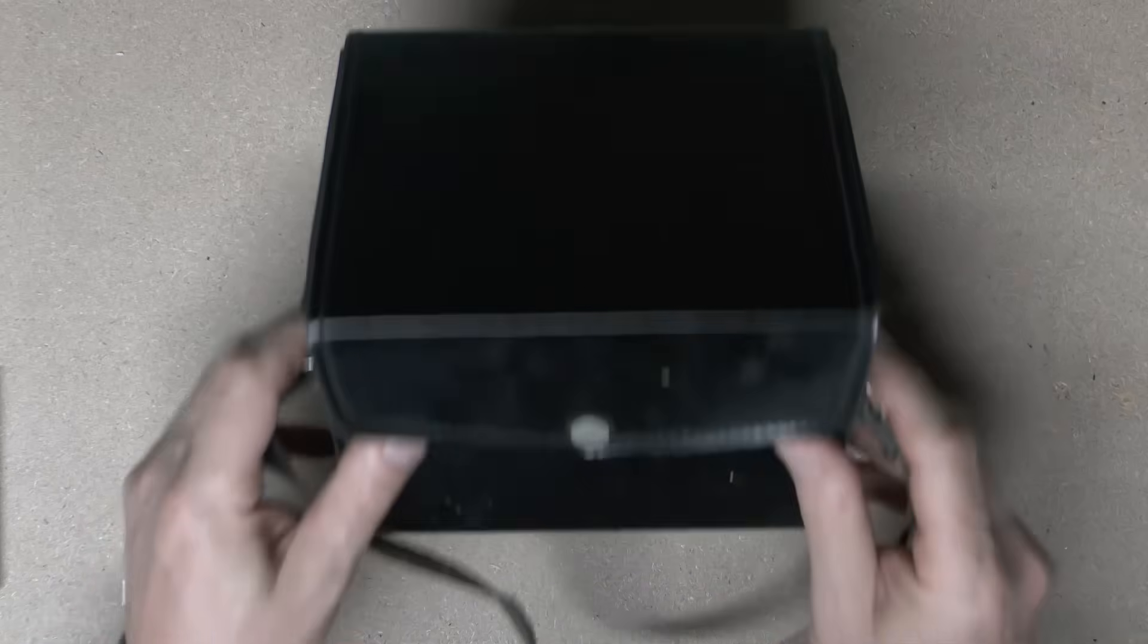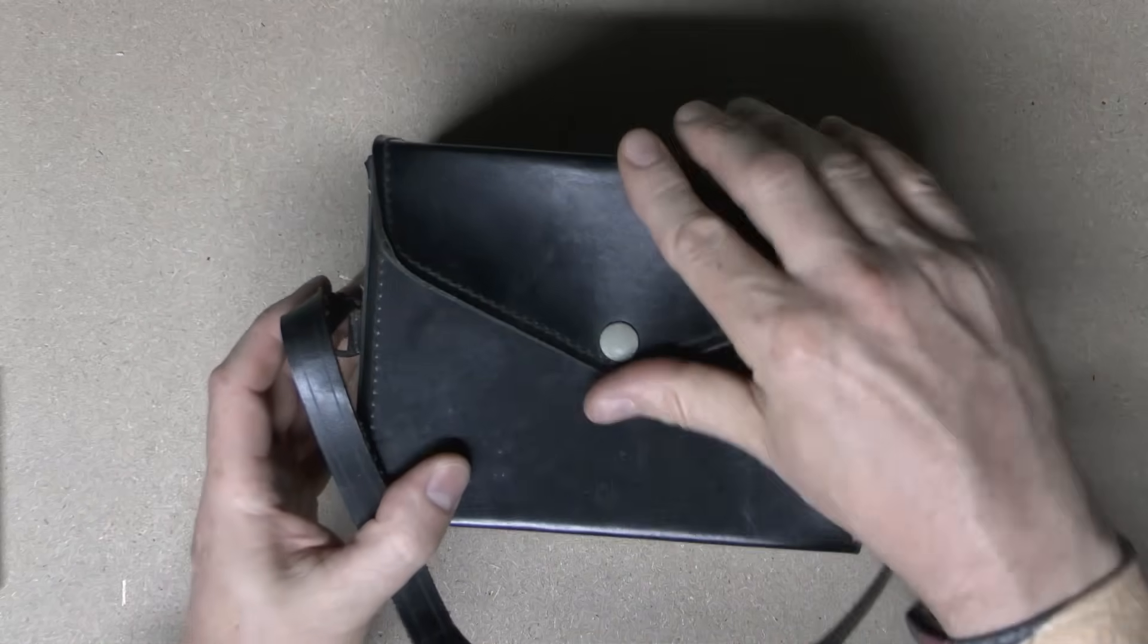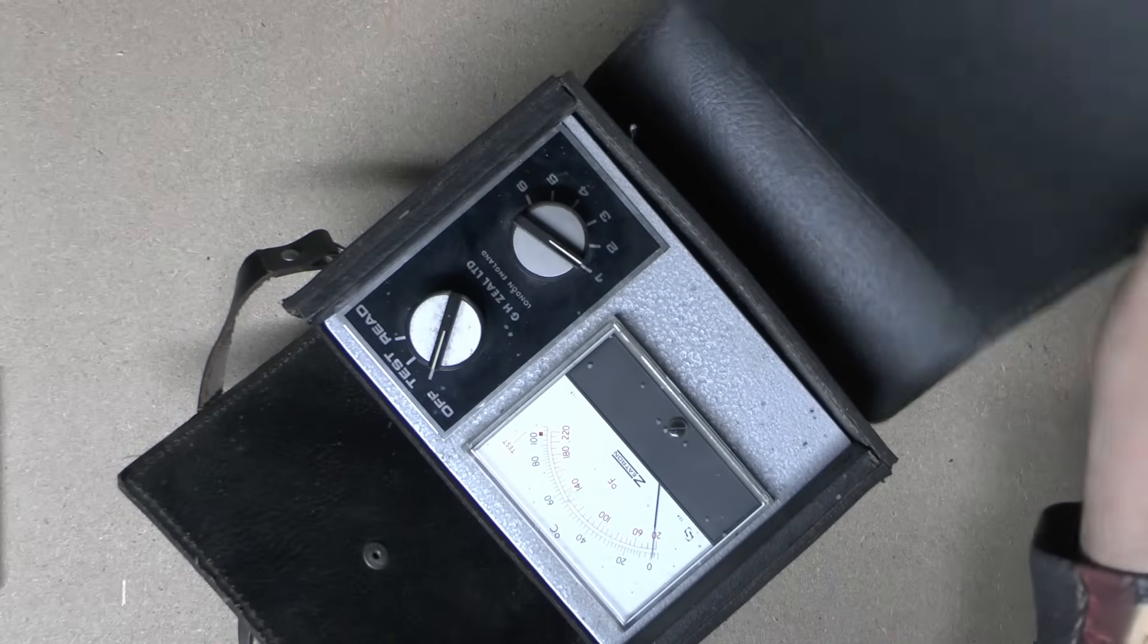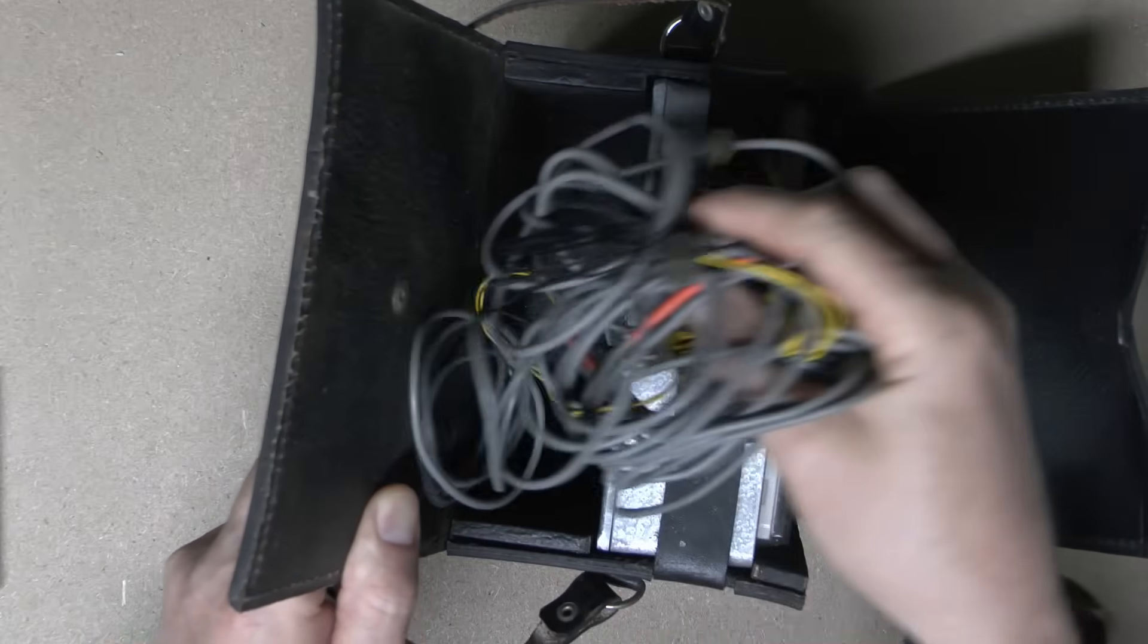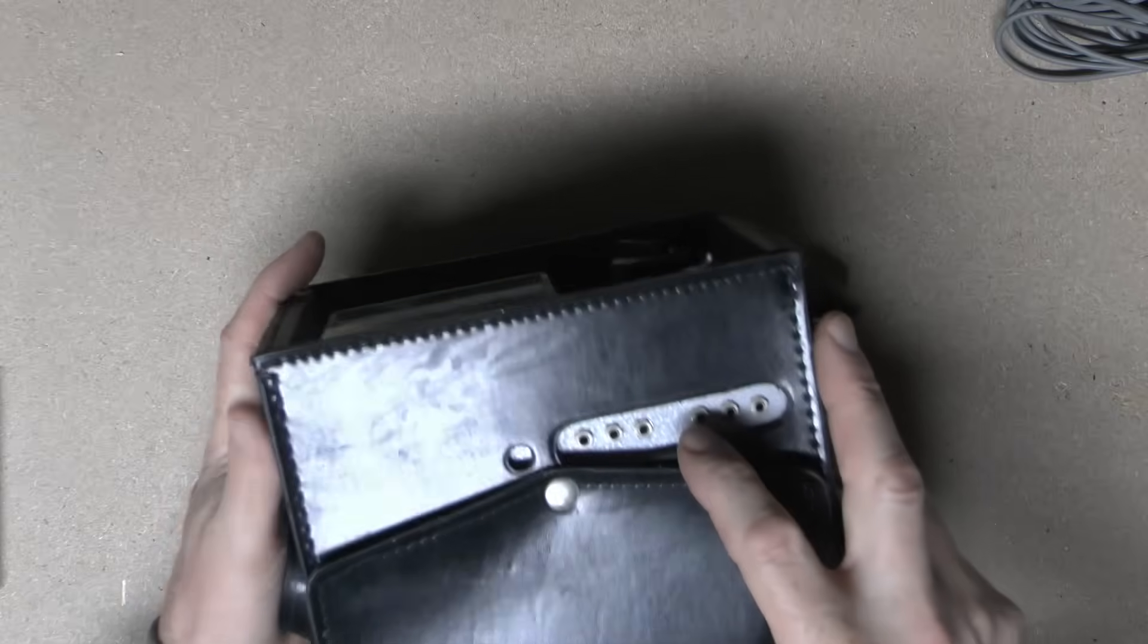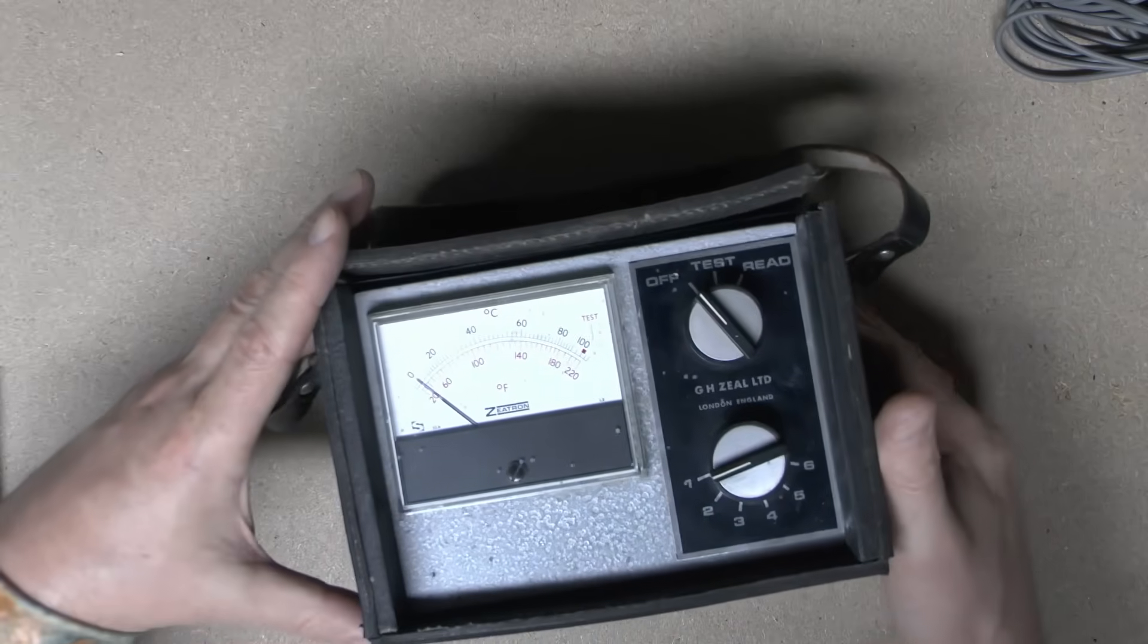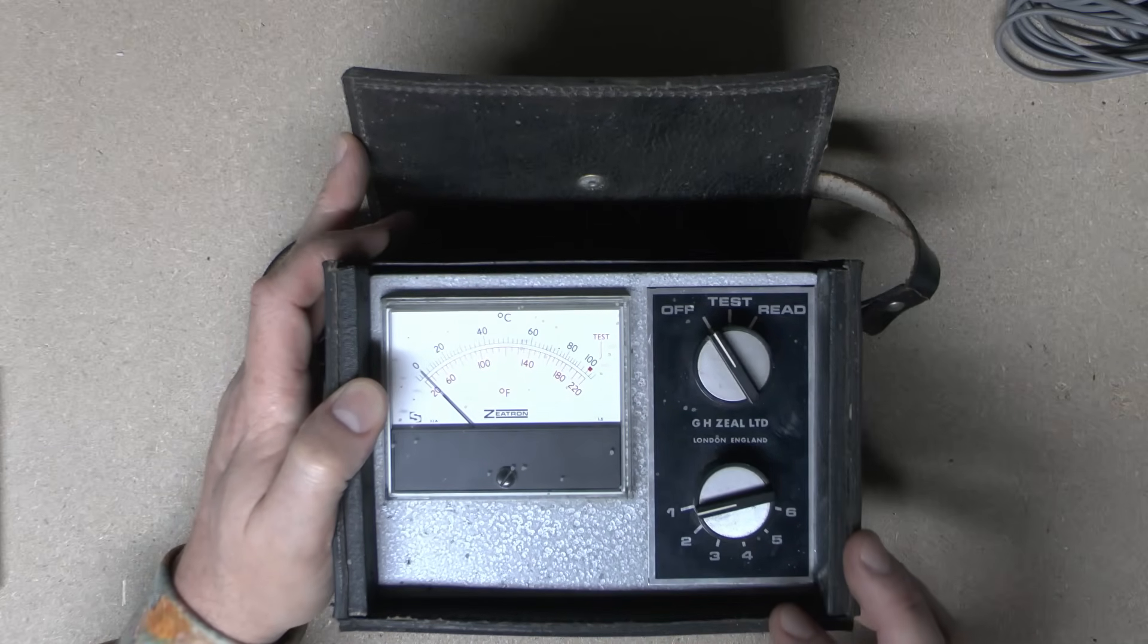So here it is in its probably leather case, a little strap there, a compact design. And if we open it up, we can see the top of the thing. In the back here, we've got a section of test leads of various types. This front bit will swivel around. And then on the front, we've got six sockets for connecting the various test leads. And then on the top here, analog meter there, and two switches here. One which says off, test and read. And this one is numbered from one to six.